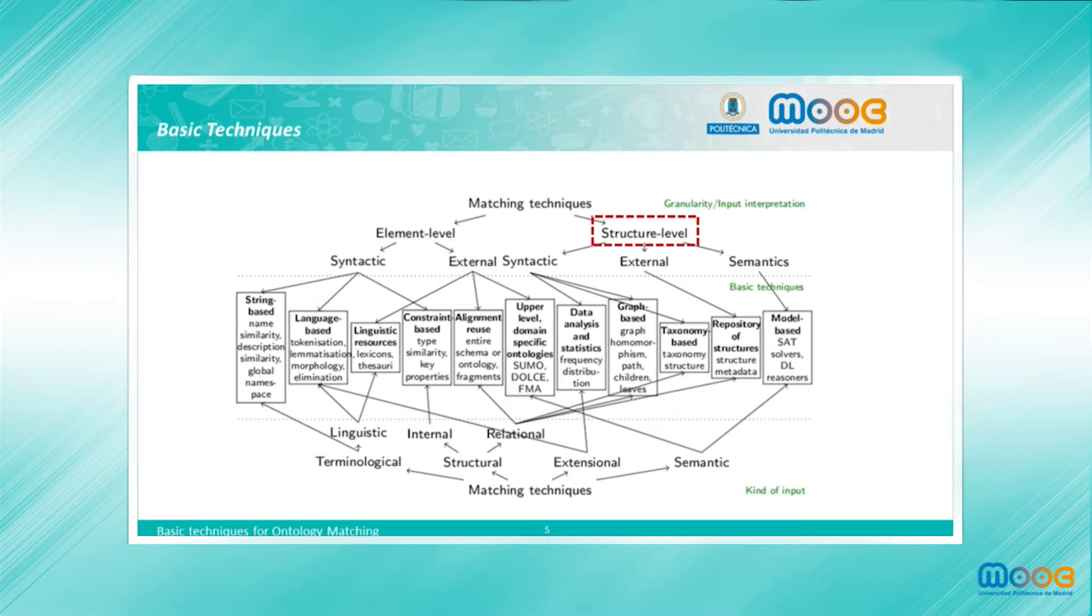Moving to the structure level set of techniques, one of them is the idea of applying data analytics techniques and statistical techniques when there is enough data in the ontology to do so, in order to detect regularities and patterns. There also exists a set of graph-based techniques that consider the ontology as a graph and compare the graphs in order to detect structural similarities. The taxonomy-based type of techniques is a particular class or subclass of the graph-based techniques that only consider the taxonomy structure in the graph.